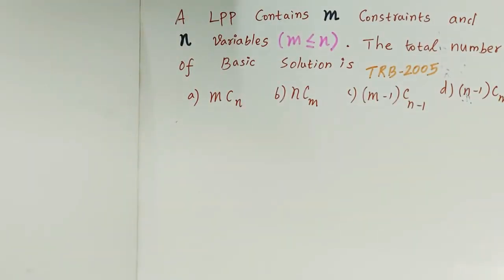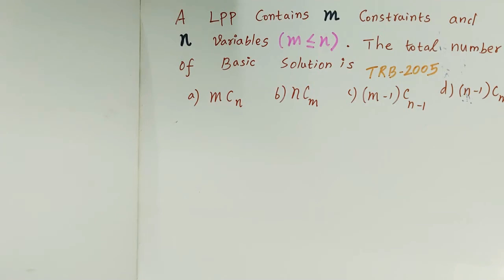Welcome to Komal Online Max YouTube channel. From TRP 2005, we will get an LPP related question. A linear programming problem contains m constraints and n variables, where m is less than or equal to n. The total number of basic solutions is to be found.